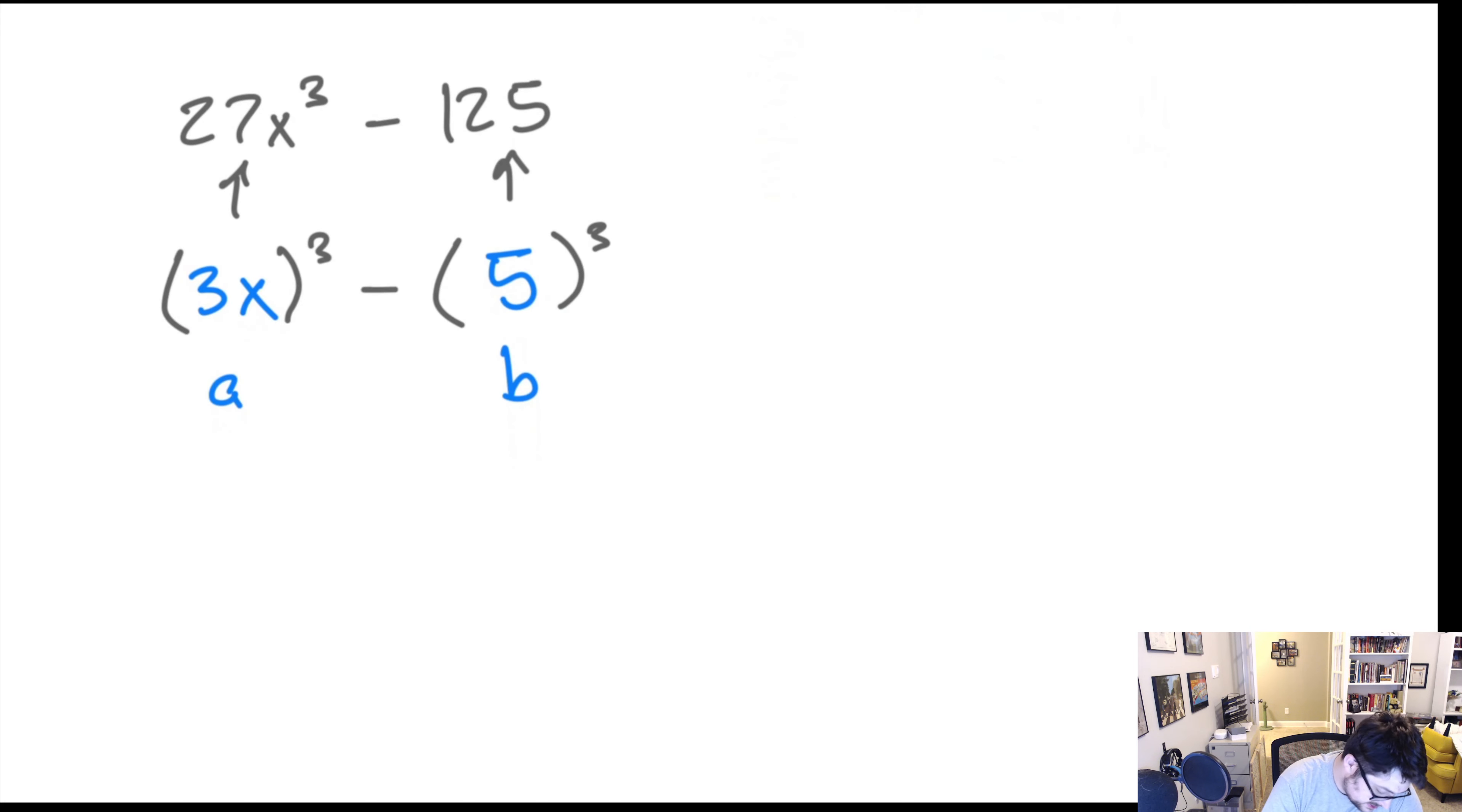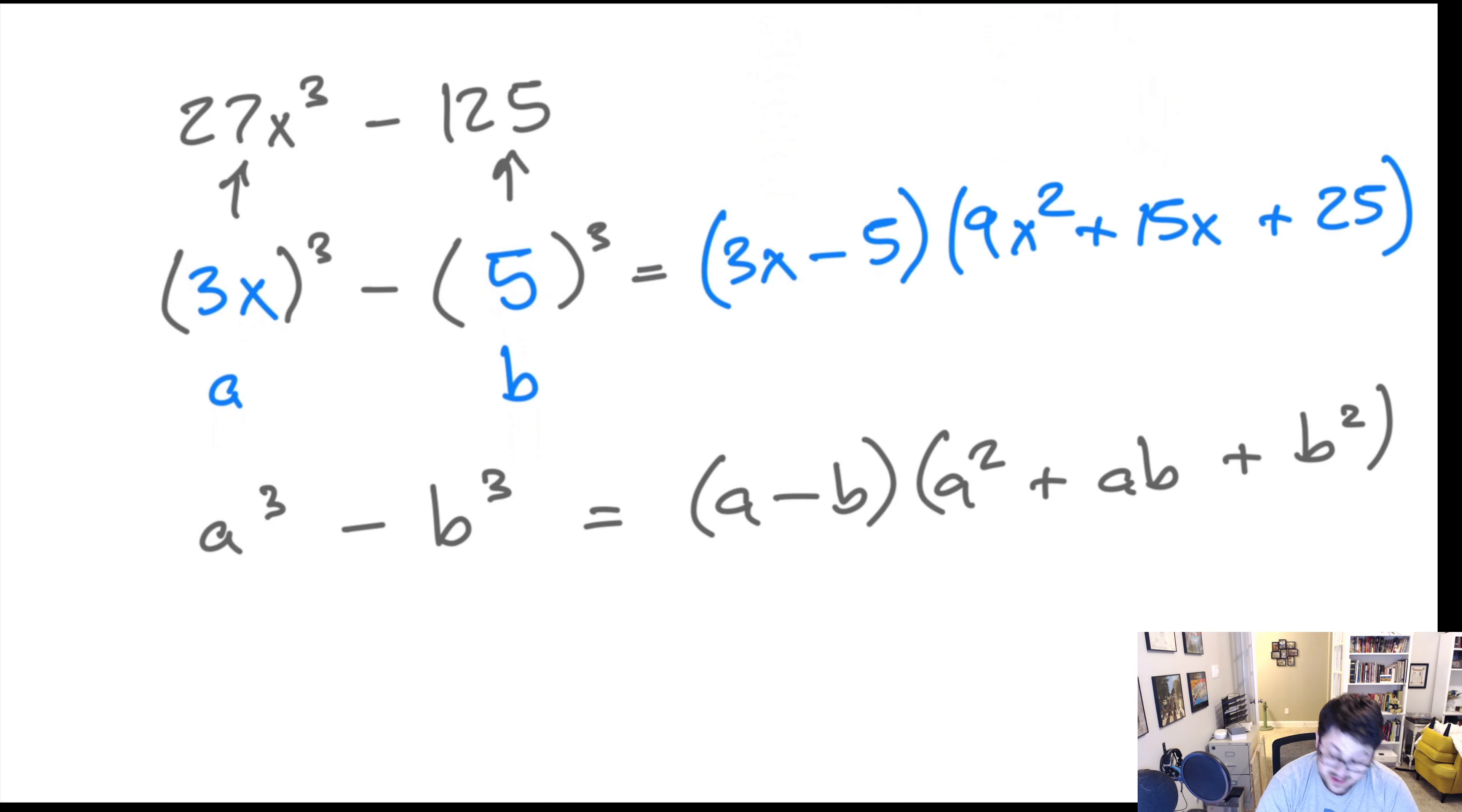Now our formula is A³ - B³ equals (A - B) times (A² + AB + B²). Let's plug everything in. What we would have is we would have 3X - 5. Then we have A squared. Our A is 3X. So we're squaring both of those. So 3 squared is 9. X squared is X². Then we'd have plus A times B. So 3X times 5. That's going to be 15X plus B squared. 5 squared is 25. That would be our final answer.